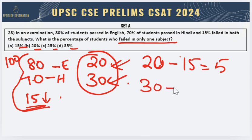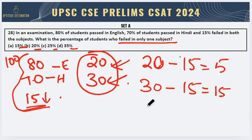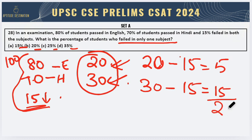The same thing goes for Hindi: 30 minus 15, which means 15 students have failed only in Hindi. Now if I calculate both of these, it's nothing but 20 students. 20 students have failed only in one subject. Therefore, option B is the right answer.